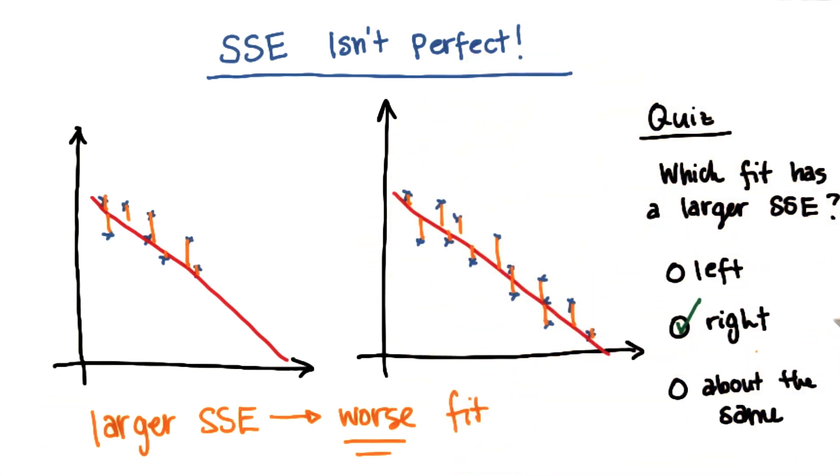So what that means is that the distribution on the right has a larger sum of squared errors, even though we agreed that it's probably not doing a much worse job of fitting the data than the distribution on the left.